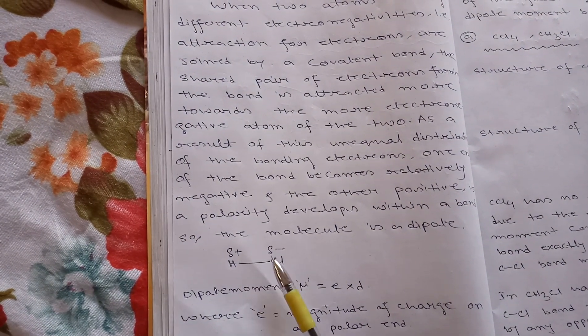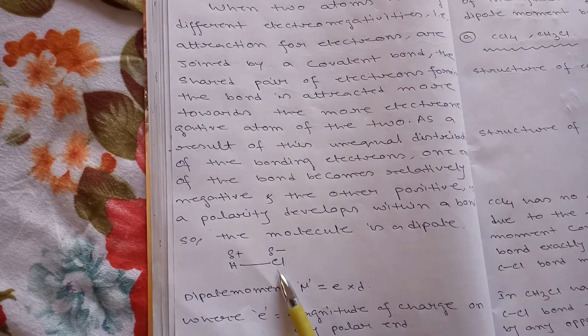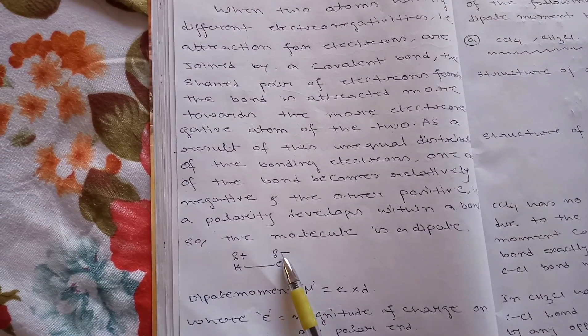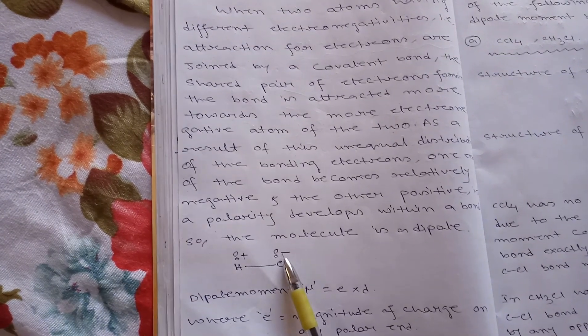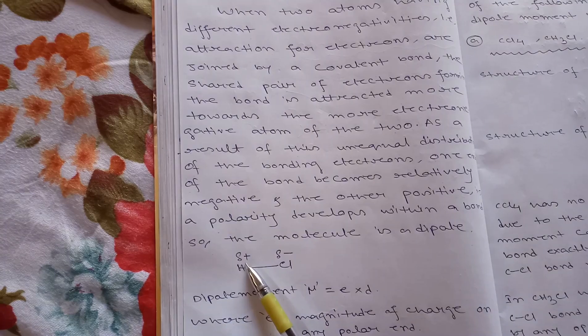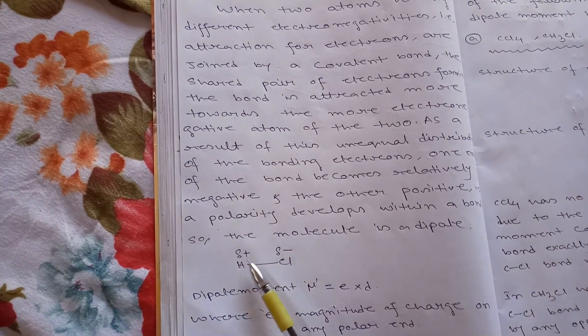For hydrogen chloride, between hydrogen and chlorine, chlorine has greater electronegativity than hydrogen. That is why it has partial negative charge on chlorine atom and partial positive charge on hydrogen atom.